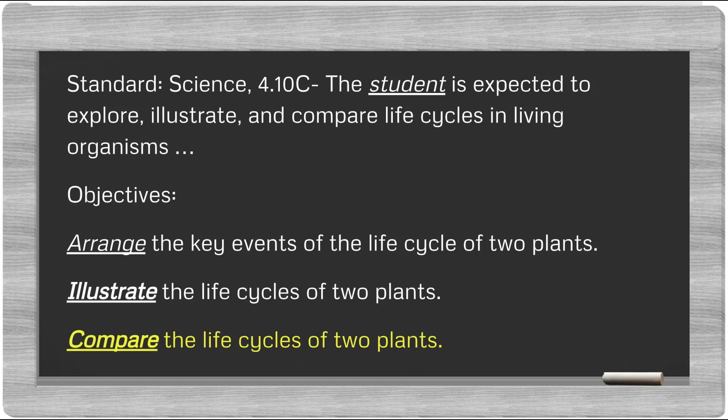Let's take a look at Science Standard 4.10c. In this standard, there are three verbs that describe the actions a student must take to master the standard. These action verbs do two things: tell a student what's to be accomplished, and tell the teacher what to look for. For the next part of this session, we'll focus on this lesson in progress. The students have arranged a set of cards into the progression of the life cycle of two plants and have illustrated the life cycle in their science notebook. So the first two verbs, arrange and illustrate, have been addressed.